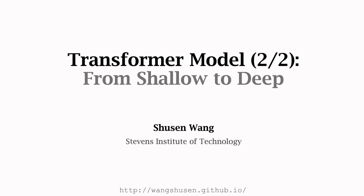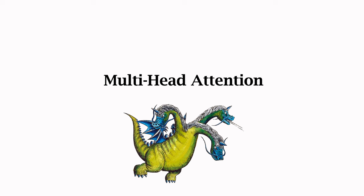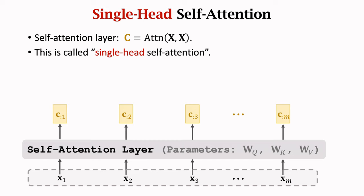Let's continue studying the transformer model. In the previous lecture, we learned attention layers. Attention layers can be stacked to form a deep neural network. In this lecture, we will stack attention layers and dense layers to build a transformer model. We have learned the attention layer and self-attention layer. They are called single-head attentions. Single-head attentions can be combined to form multi-head attentions. The first topic in this lecture is multi-head attention.